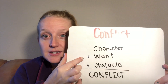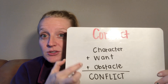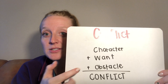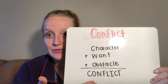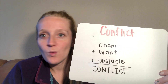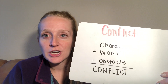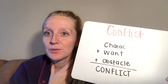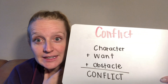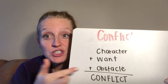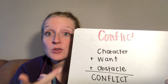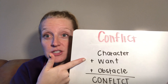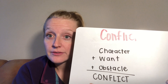Adding these all together: the character plus their want plus their obstacle equals a conflict. For example, Harry and Ron wanted to sneak out to go to the wizard's duel, but Hermione was telling them not to and was there with them. So that was an obstacle in the way of Harry and Ron wanting to go, and that caused a conflict.